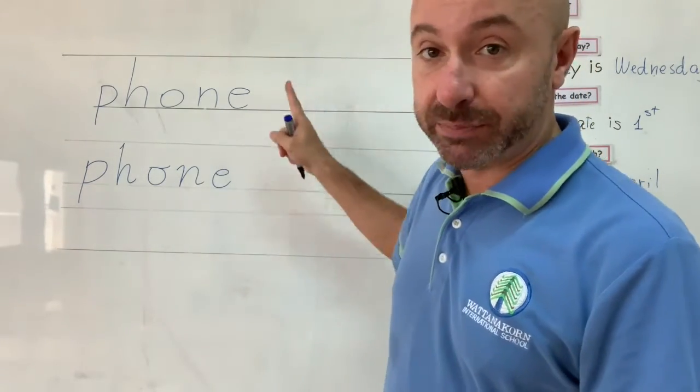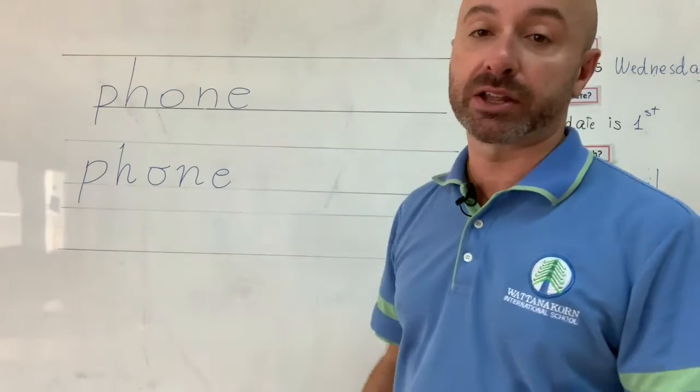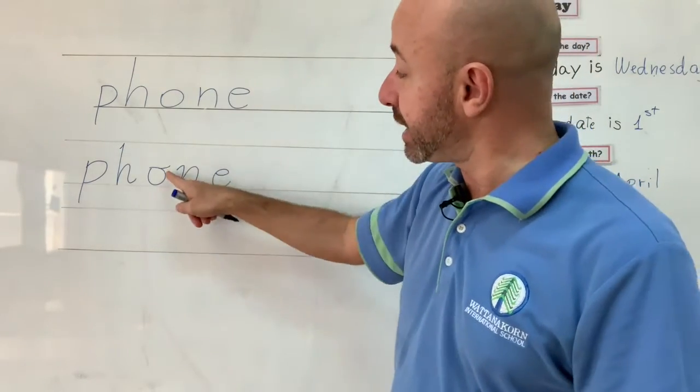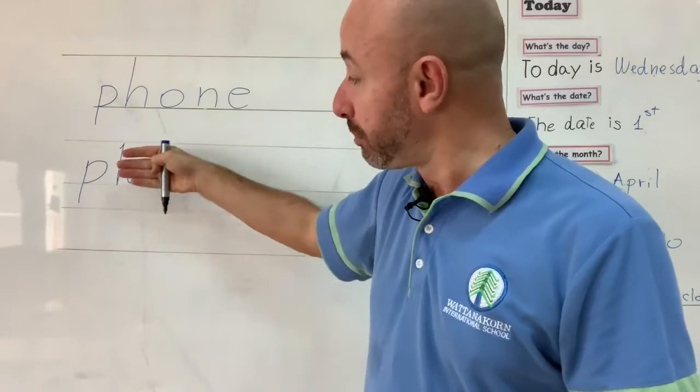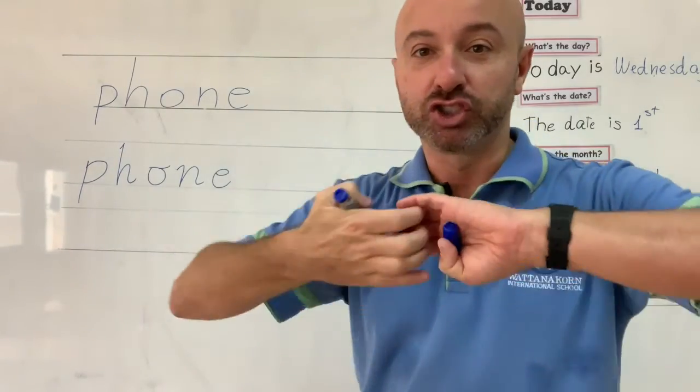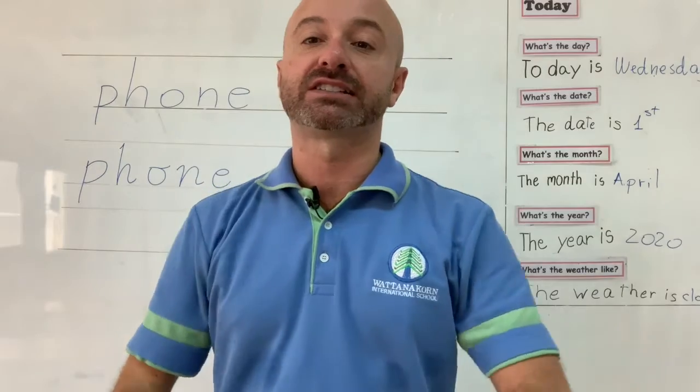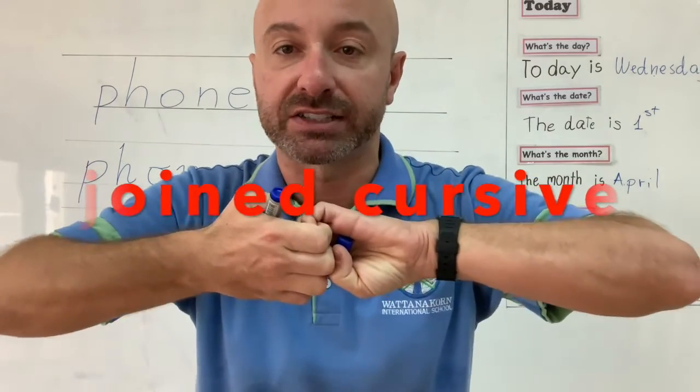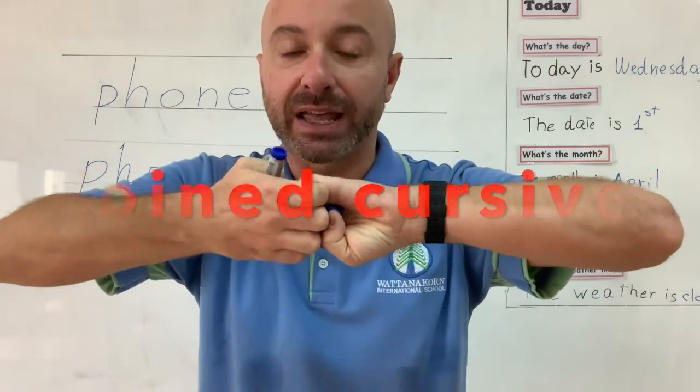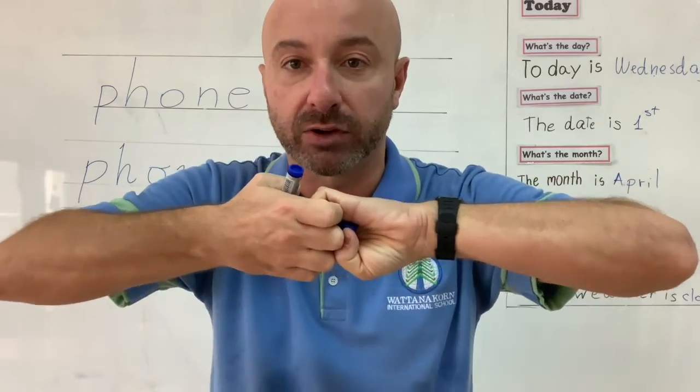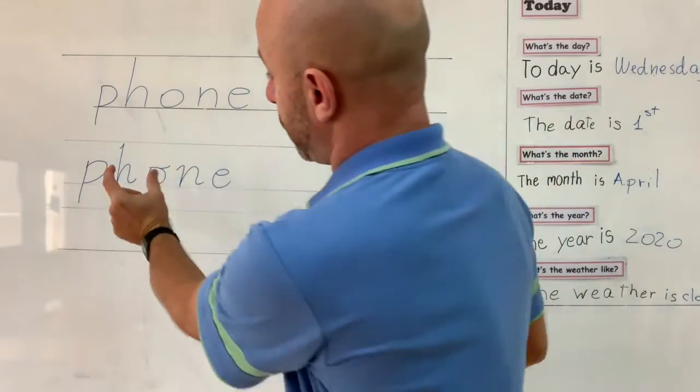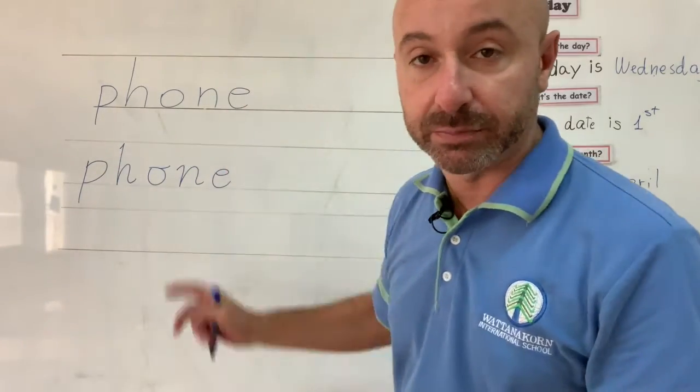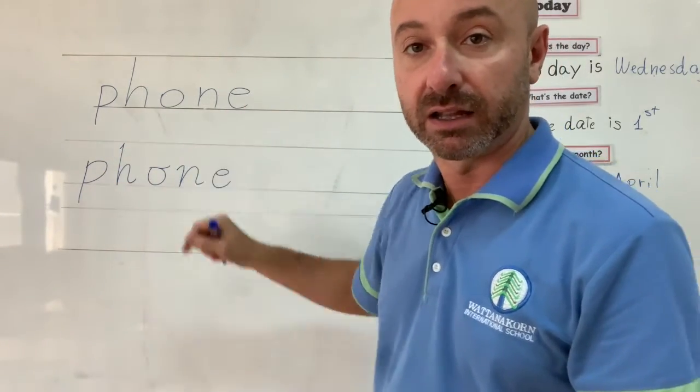This is manuscript, this is cursive, and now we are going to write the same word with the same letters but joint. And so this is joint cursive. Joint means together, means connected. So we are going to copy the same words but without the space between one letter and the other.